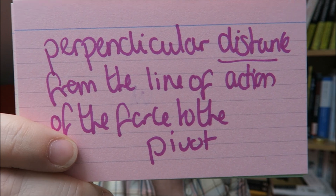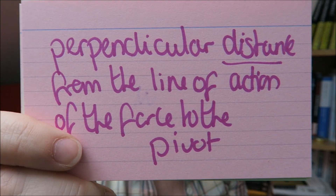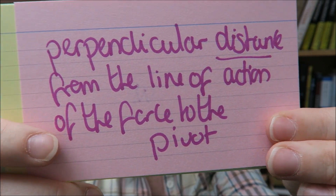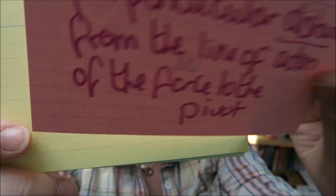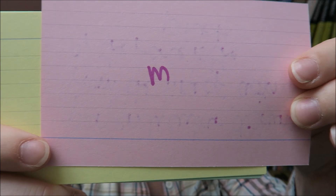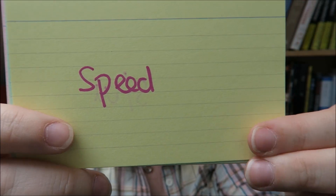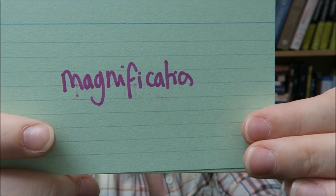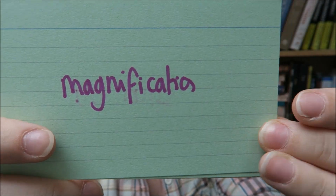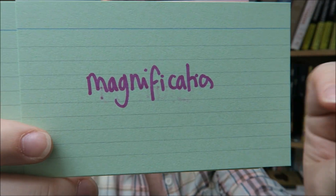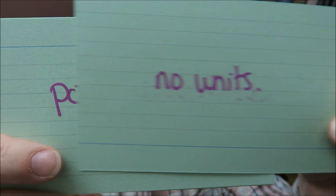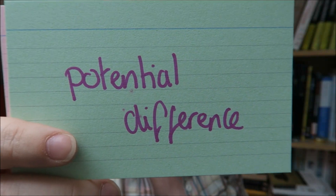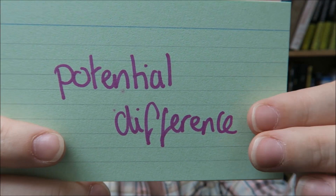Perpendicular distance — the important word in there is distance, because it is measured in metres. Speed is measured in metres per second. Magnification — this is a nasty trick one because there are no units for magnification, it's just a number.